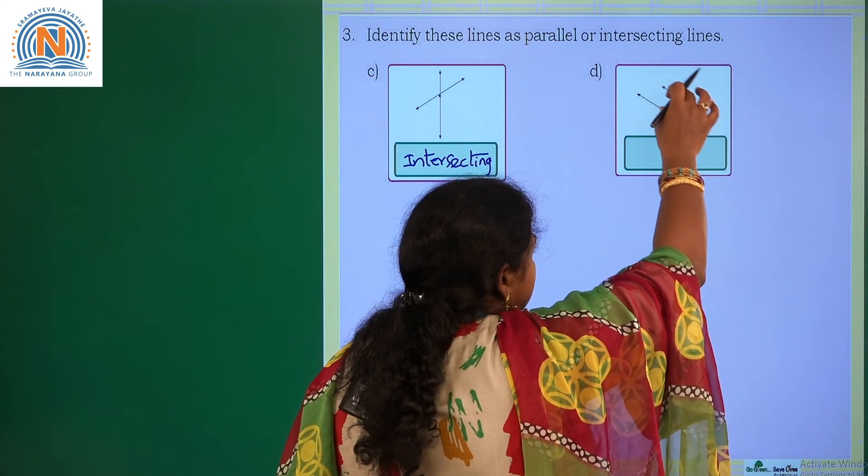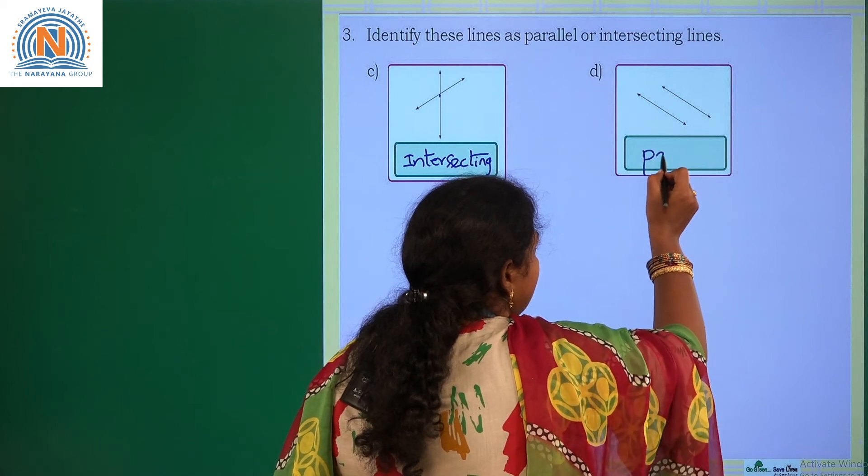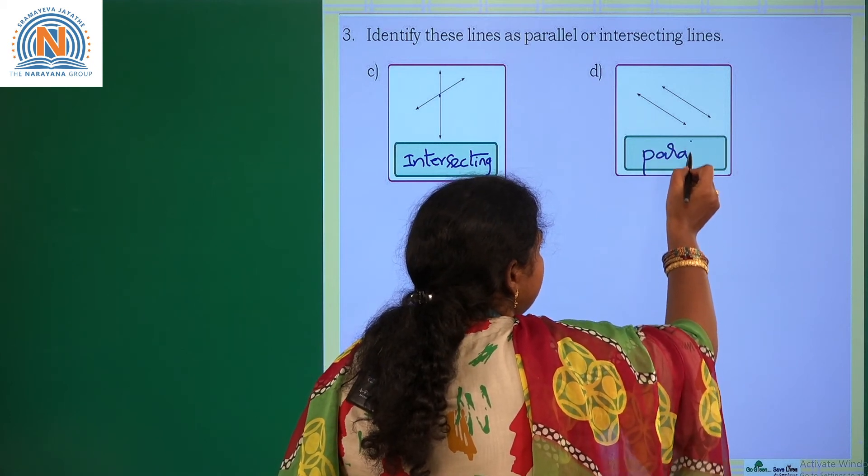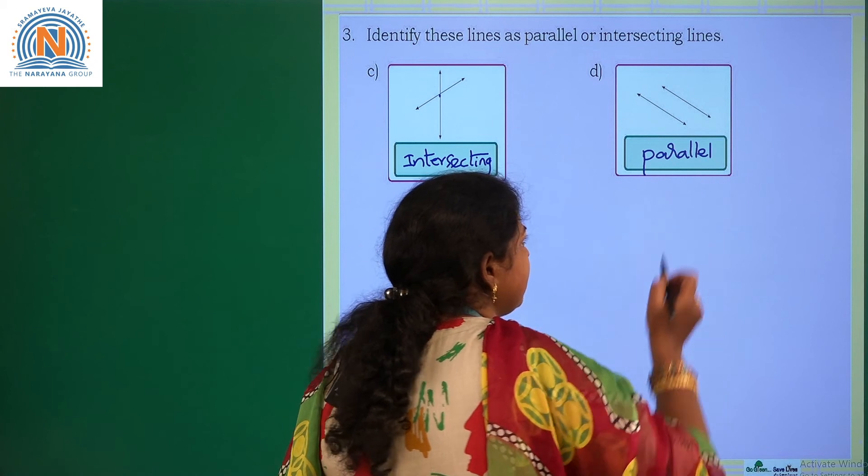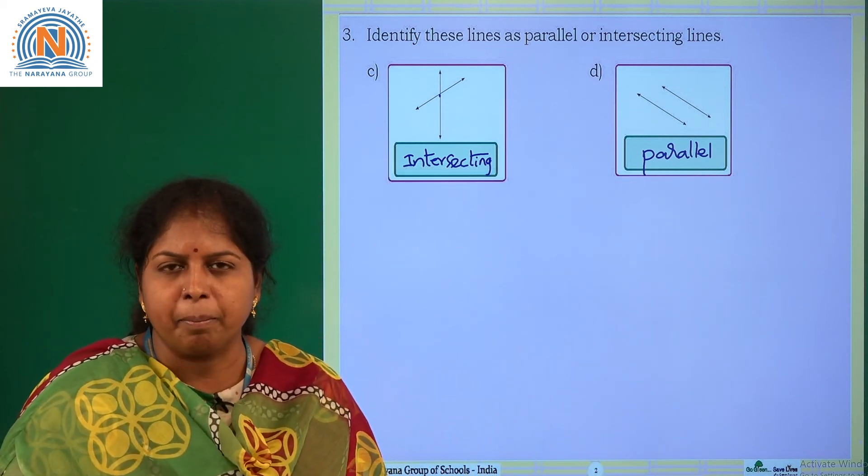They both seem like parallel. So they both are known as parallel lines. Where will you observe parallel lines in real life, children? If you observe the railway track, it is the best example.